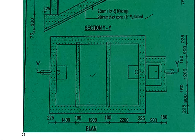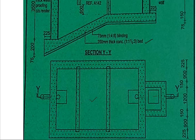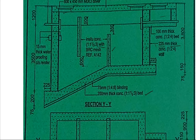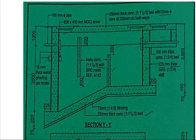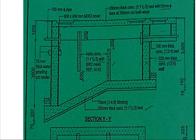We've been given Section YY so that we can get the fine details of the septic tank. Starting from the bottom: down here we have 75 millimeters blinding, and then after that we have concrete which is 200 millimeters thick, mix 1:1.5:3.